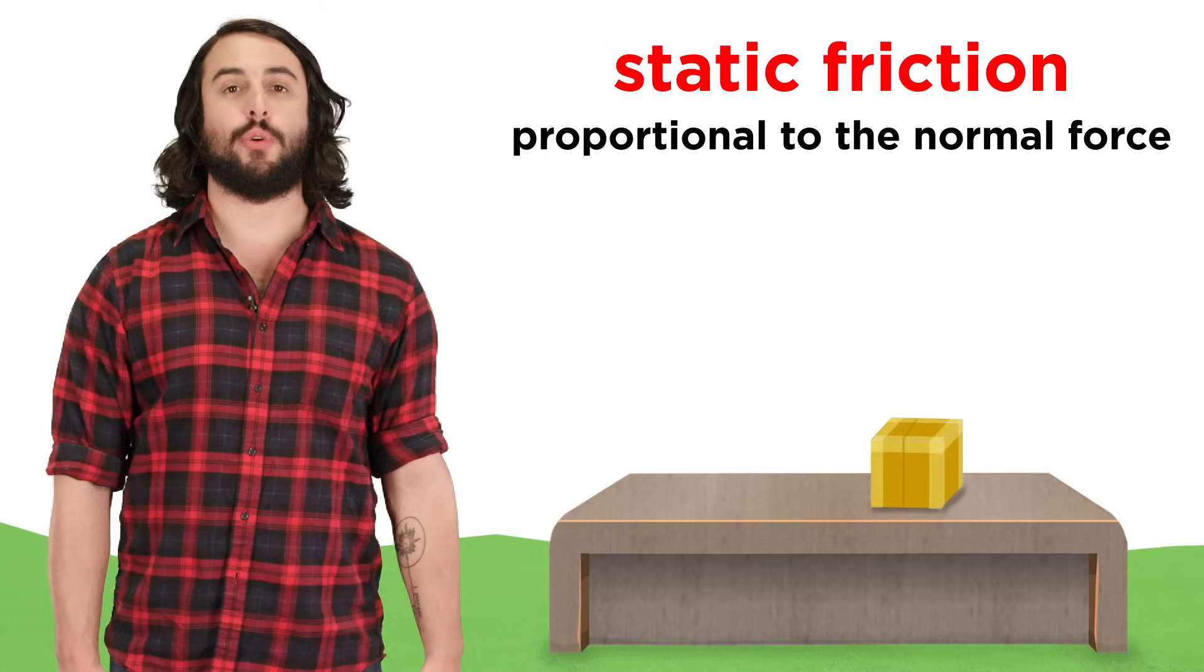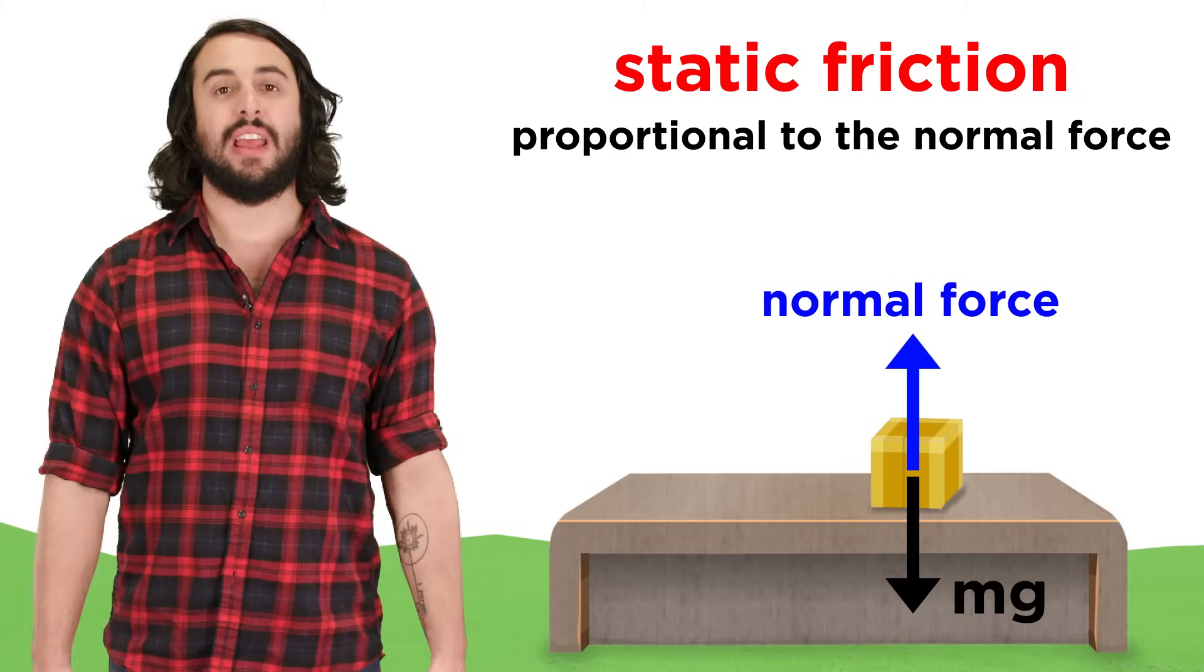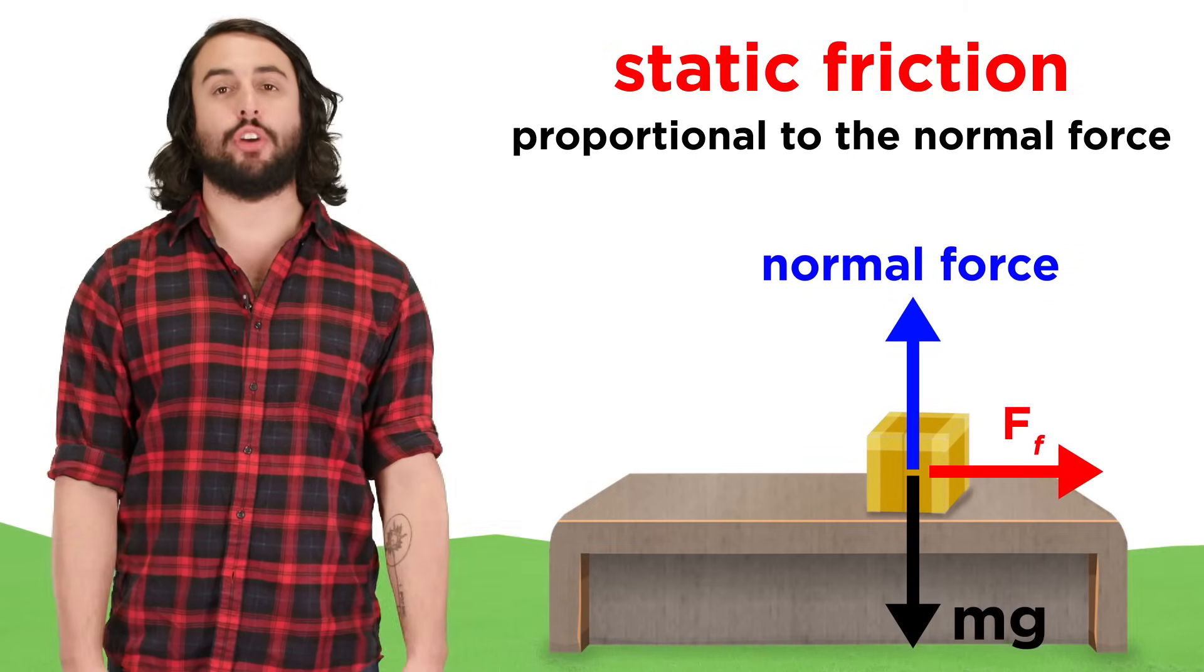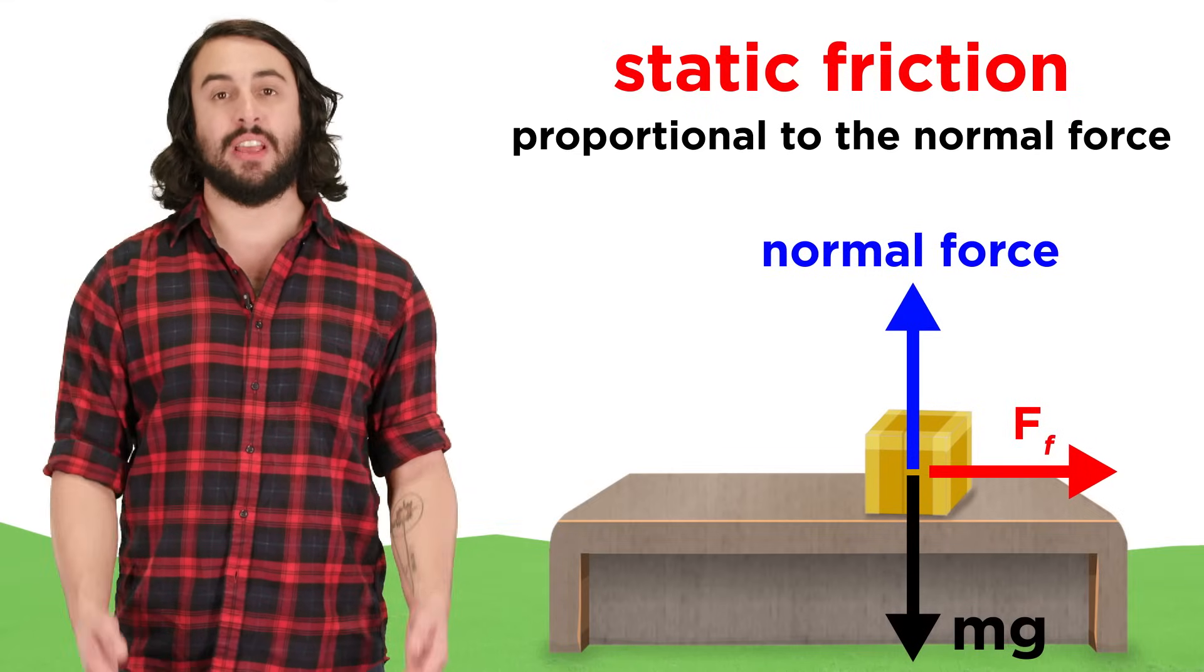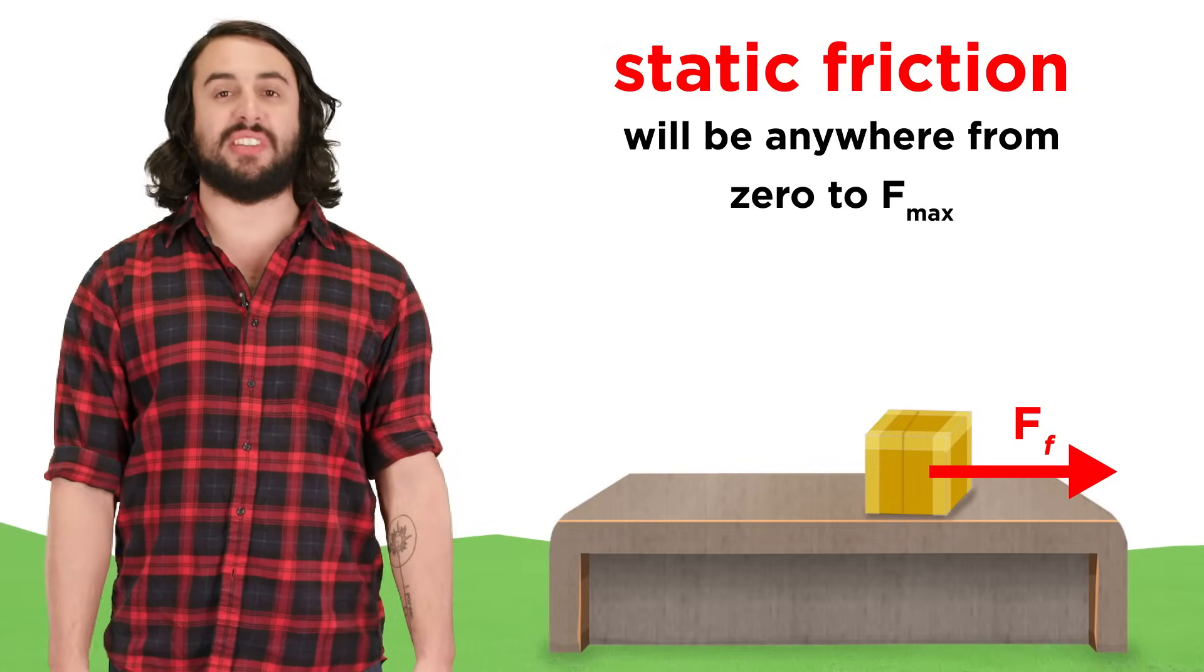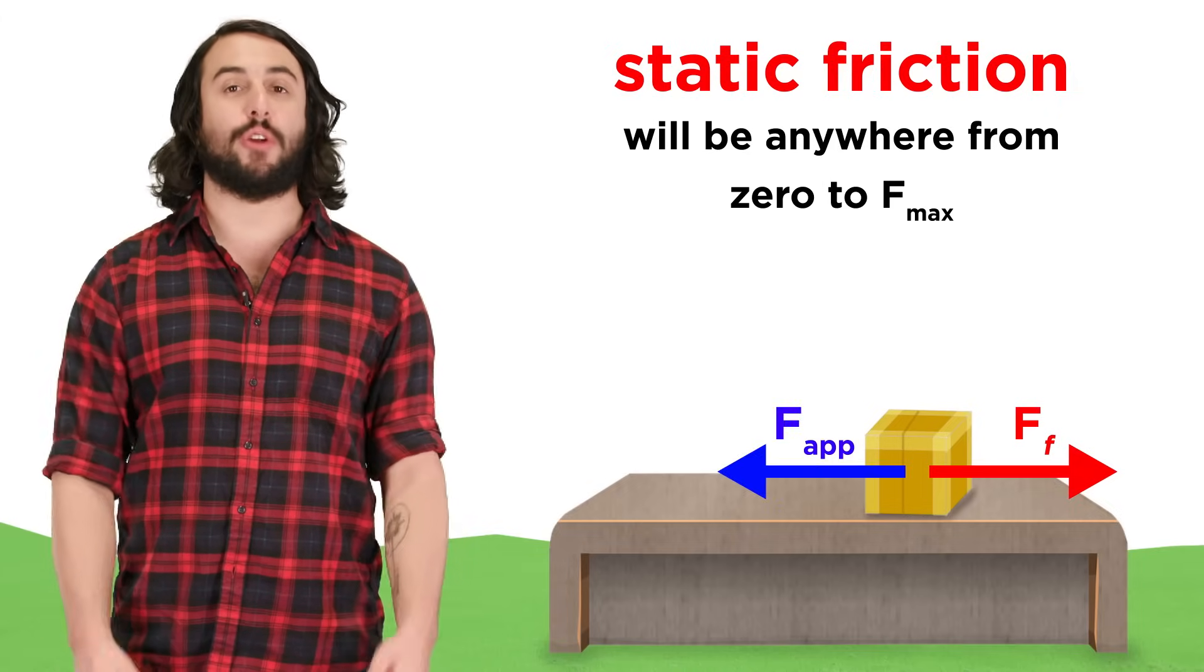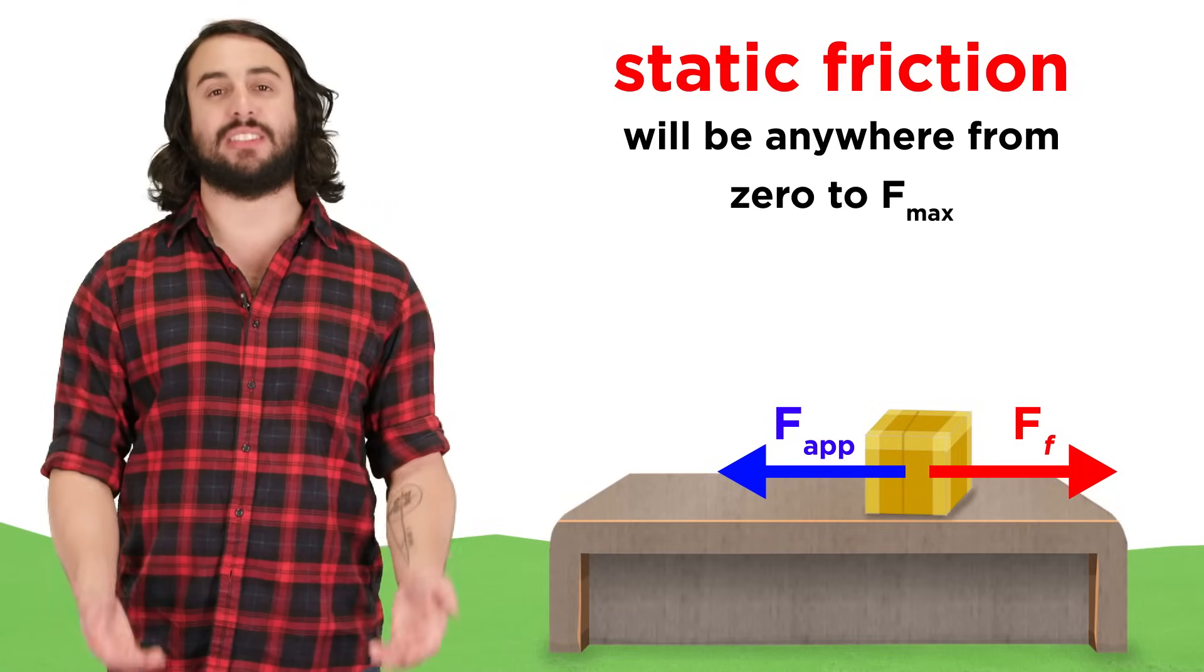This frictional force is proportional to the normal force, so the heavier the object the greater the normal force, and the greater the frictional force. This is because as the weight of the object increases, the harder it presses down on the surface, which will increase the number of contact points between the object and the surface. The static frictional force will be anywhere from zero to the maximum possible value, depending on the forces operating on the object, since the static frictional force will be equal to the applied force until the maximum is reached.